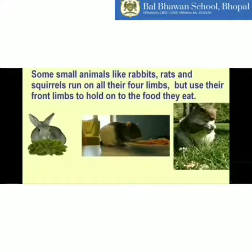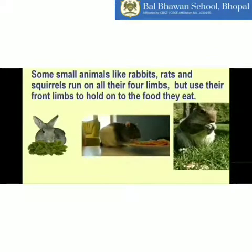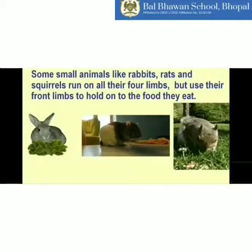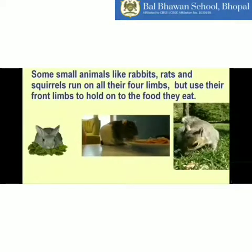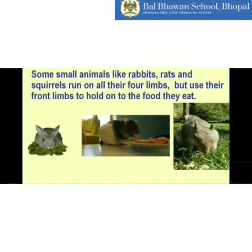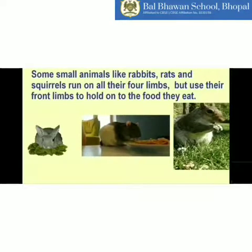Some small animals like rabbits, rats, and squirrels — we call them rodents. They have four limbs and use all their limbs to move. They also use their front limbs to hold the food that they eat.